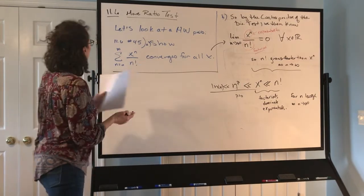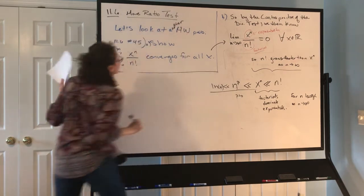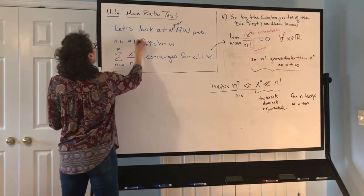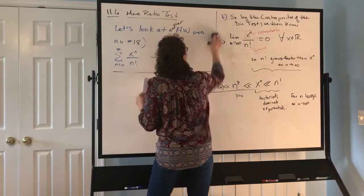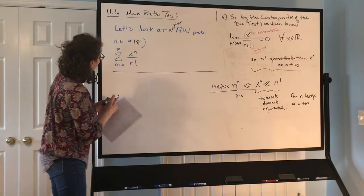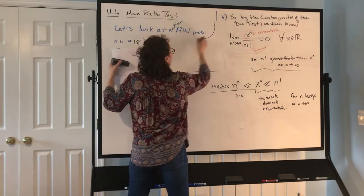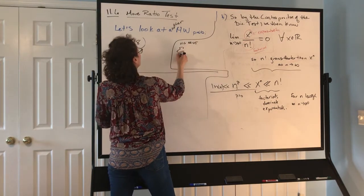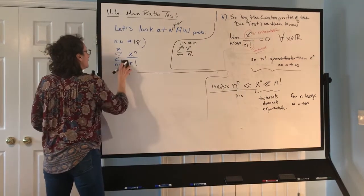Let's look at another homework problem: 11.6 number 18. Number 45 was the sum from n=0 to infinity of x^n over n factorial. Let me write this series out: 1 + x + x²/2 + x³/6 + x⁴/24 + ⋯ We'll see this friend again. But now, number 18 changes things.